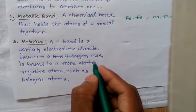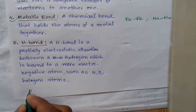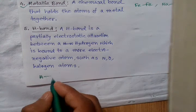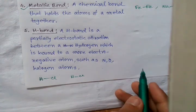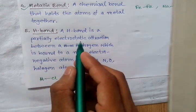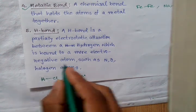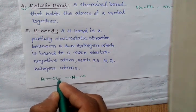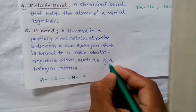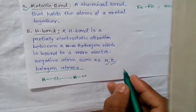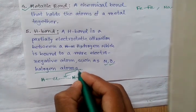A hydrogen bond is a partially electrostatic attraction between a hydrogen atom which is bound to a more electronegative atom — such as in HCl interacting with another HCl molecule. The electronegative atom may be chlorine, nitrogen, oxygen, or any halogen atom. The hydrogen bond is a weak interaction.